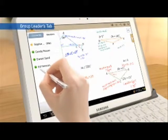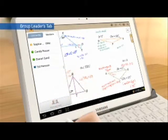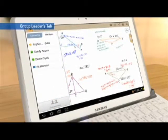The group leader can have a group member present during the lesson by selecting a group member in the tray menu on the left side of the screen.